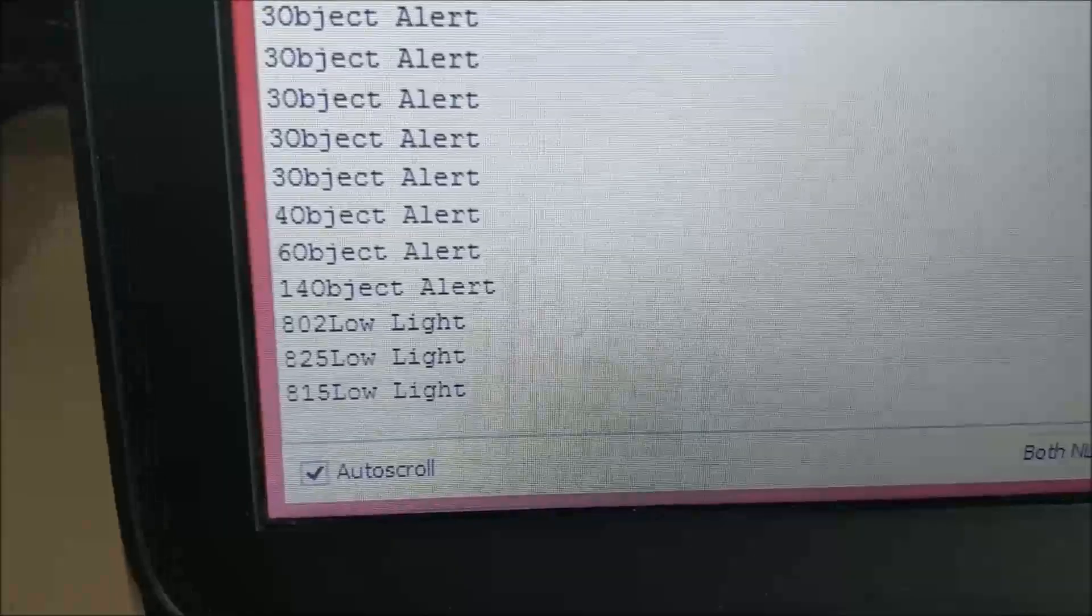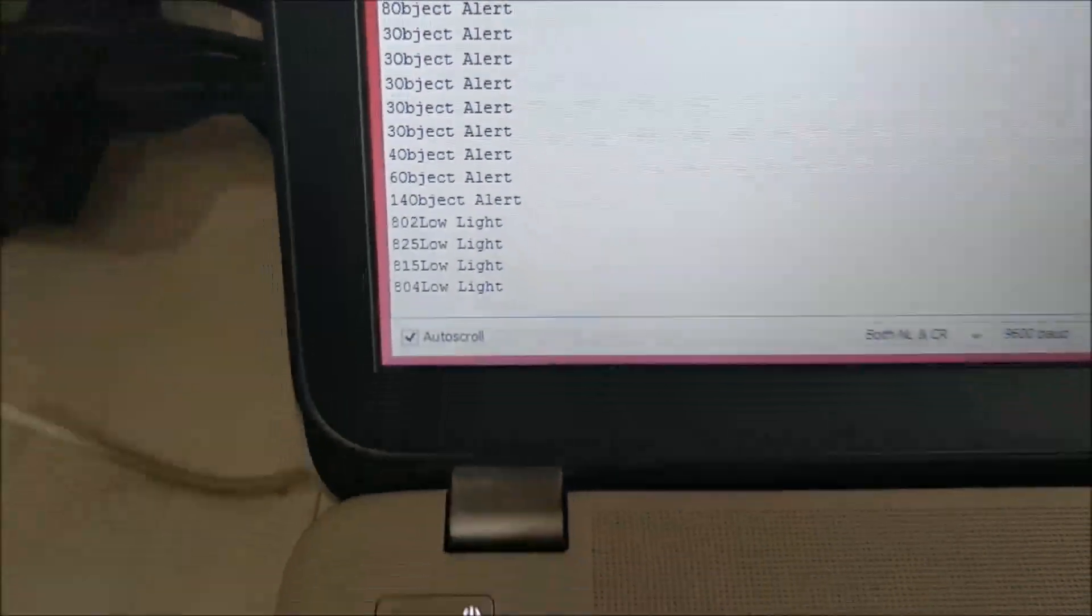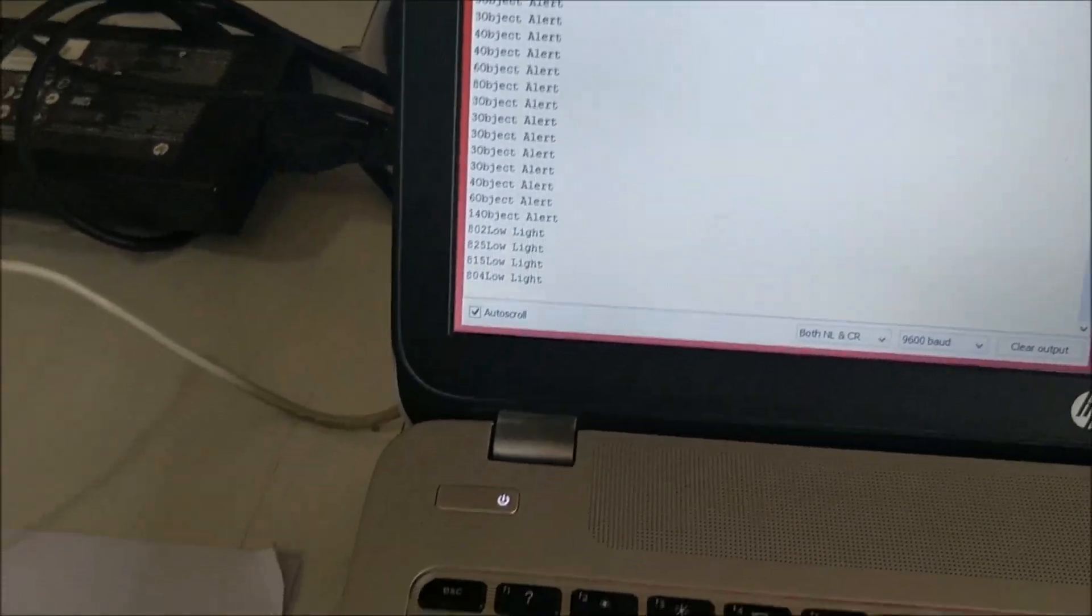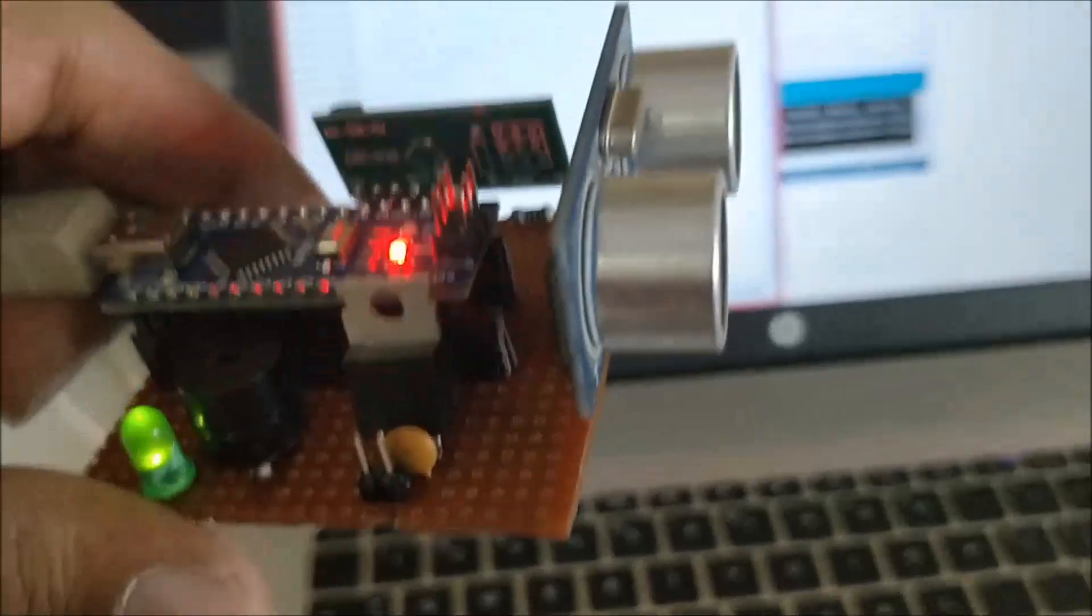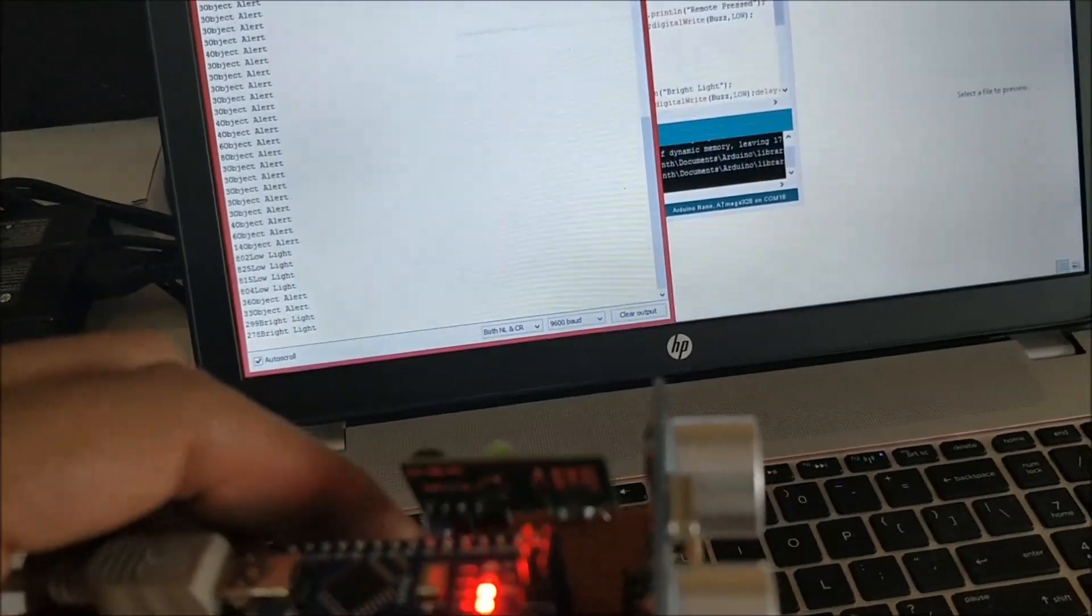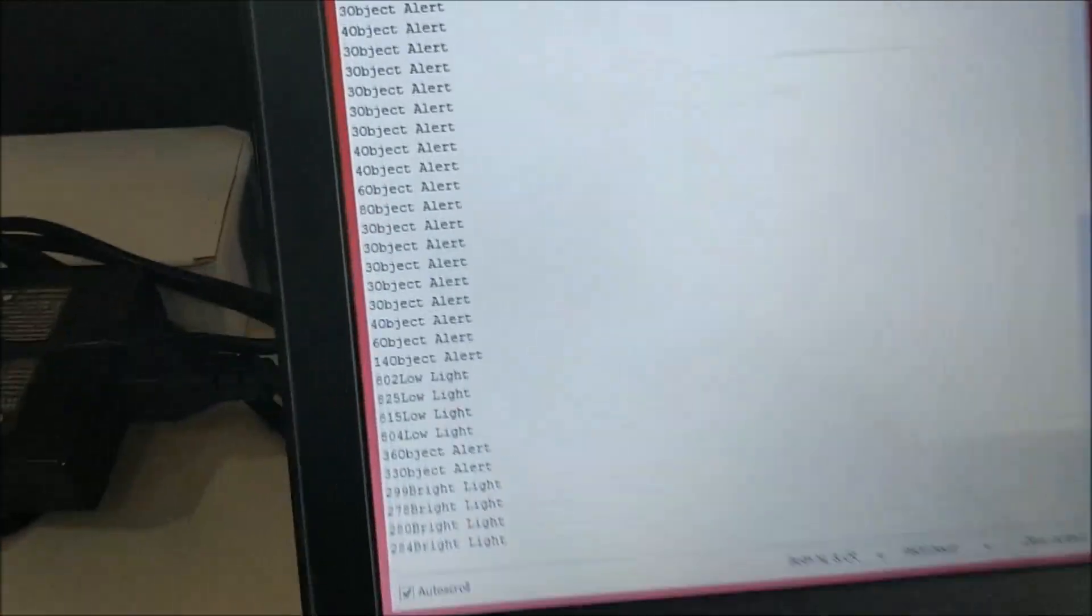You will see that a low light alert has been triggered. Similarly, you can also check for high light. I'll just move this towards my window and this is the alert for bright light.